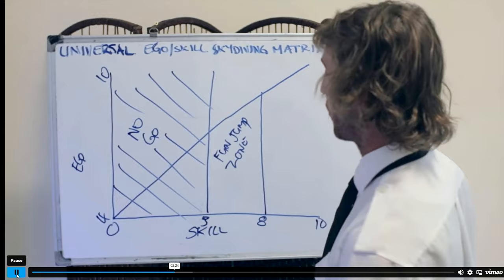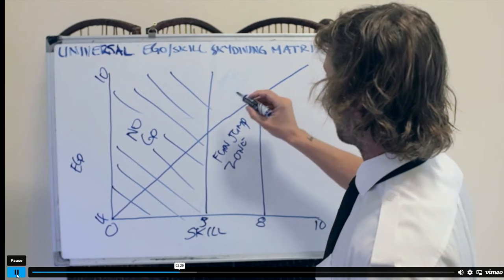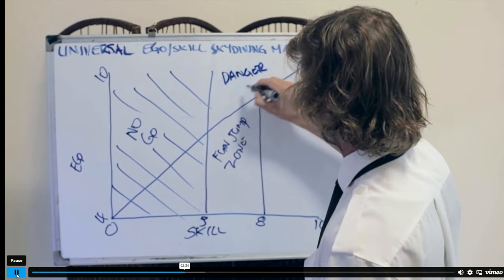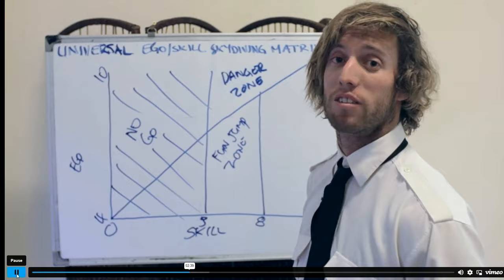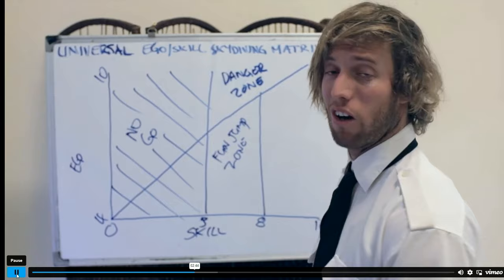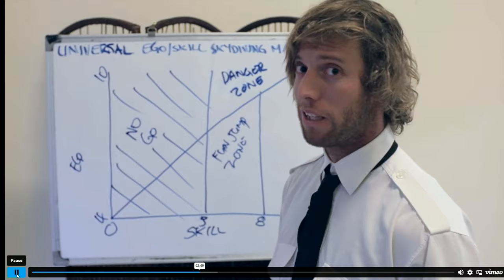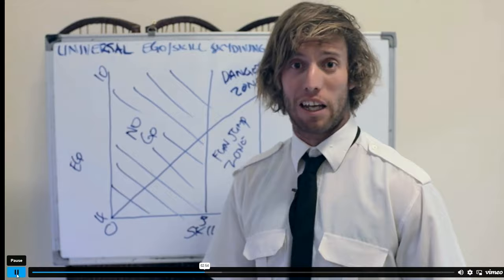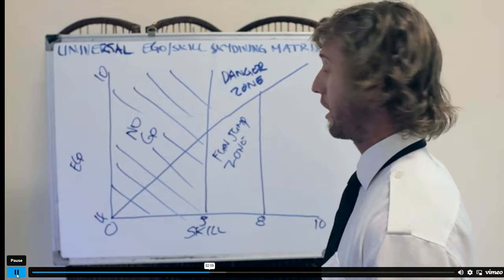Above the ego-skill line is your danger zone. We don't want to end up here and we don't want to hang around with people in this zone. These are your ground generals, tunnel rats, the ones that don't skydive. This is where your kit gets taken off you for the day, you get grounded, and the fun stops. These are definitely the people you don't want to hang out with.